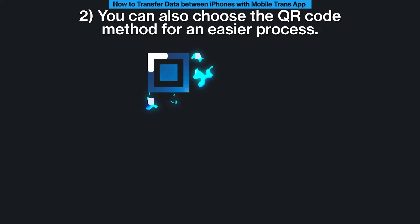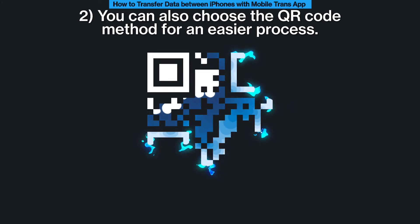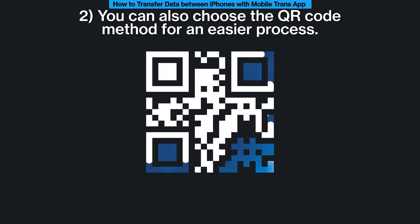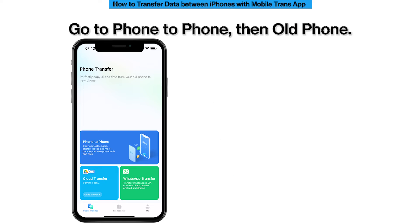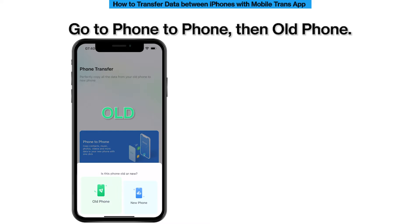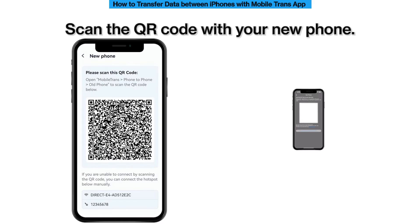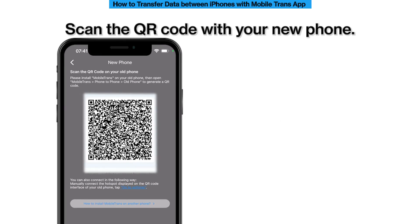Second, you can also choose the QR code method for an easier process. Go to Phone to Phone, then Old Phone. Scan the QR code with your new phone.